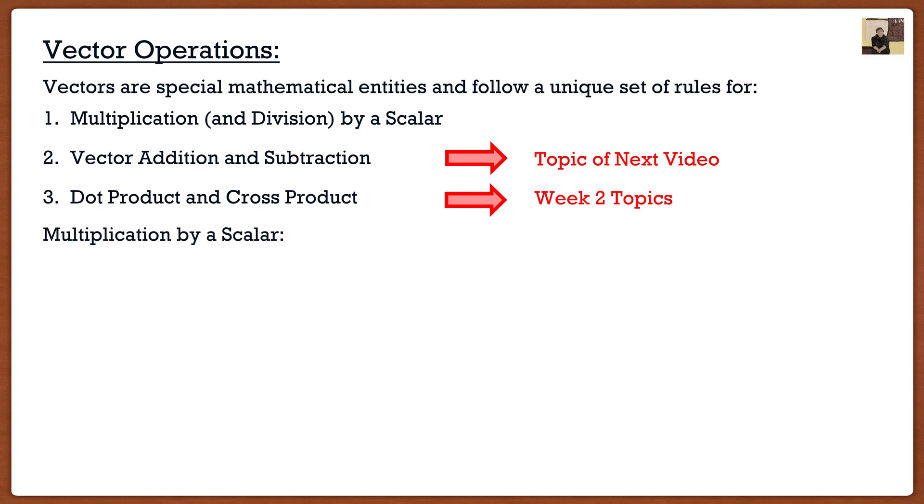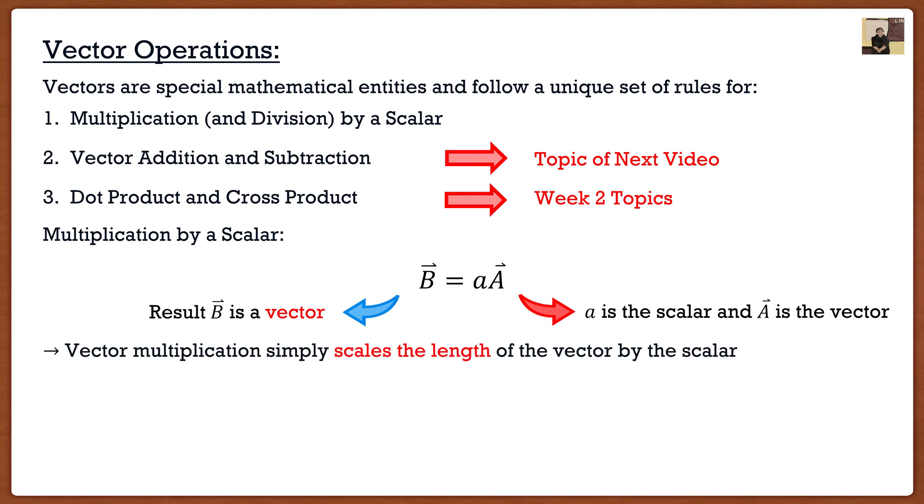Now let's talk about that first one multiplication by a scalar. Like I said, it sounds complex, but it's actually really simple. If we were to have a vector A and multiply it by a scalar small a, well, the result is actually going to be another vector B. So again, small a is a scalar and capital A with the arrow, that's going to be our vector. And the result of this is also going to be another vector. Now vector multiplication simply scales the length of a vector by the scalar. Now you guys may be saying, Clayton scales the length. What does that mean? Well, let me show you.